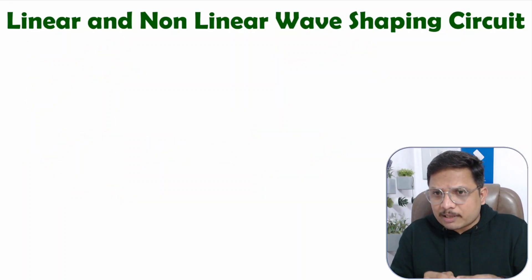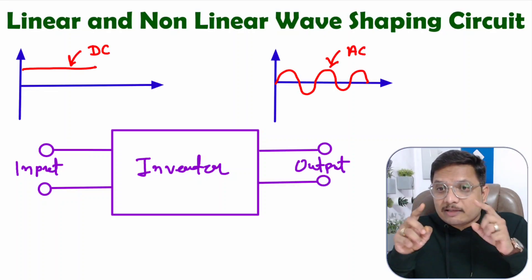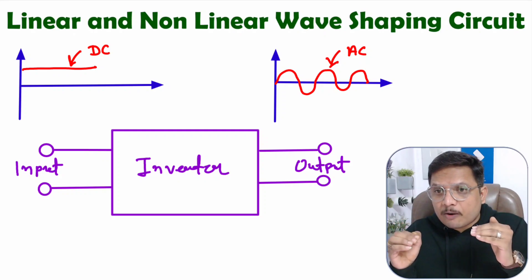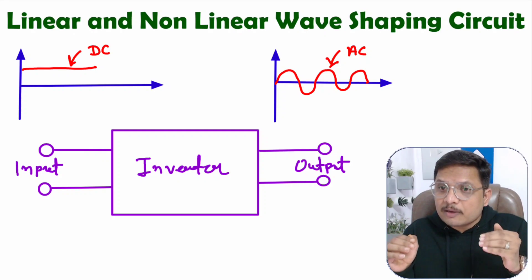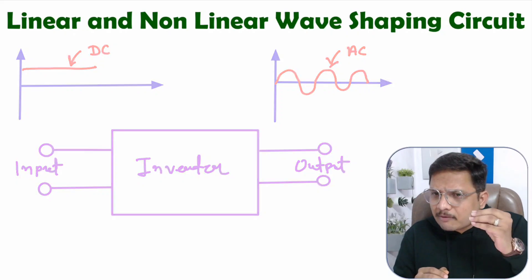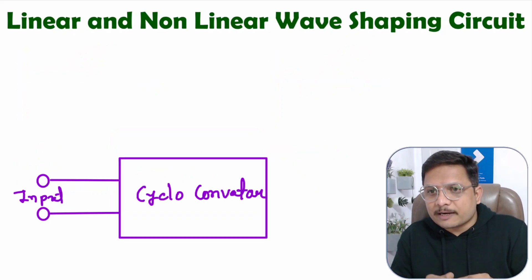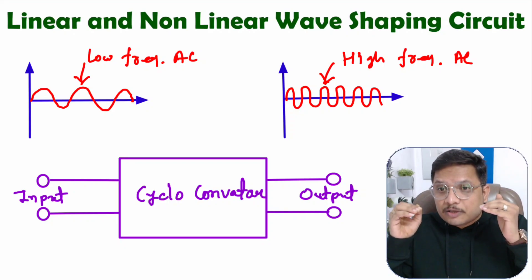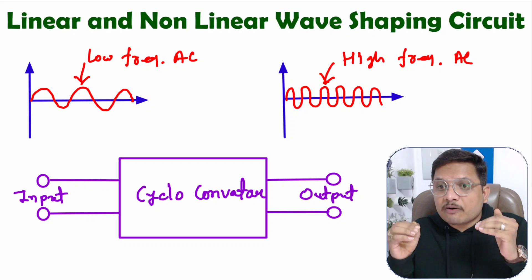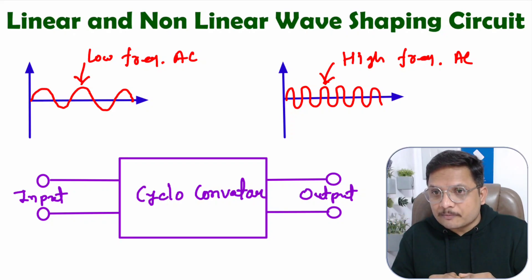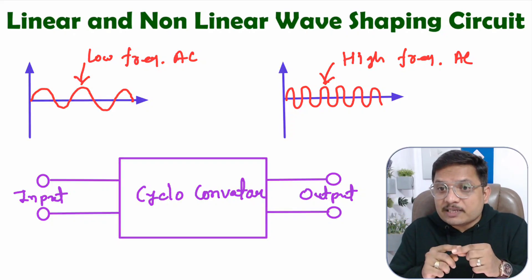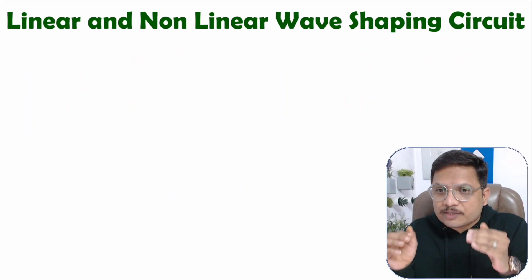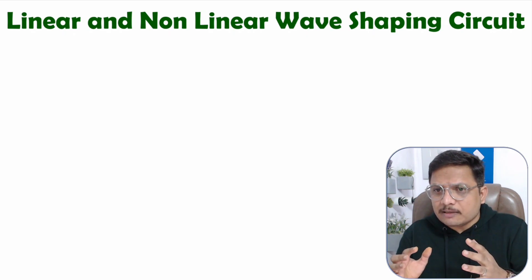Let us have one more example: if you use an inverter, input will be DC and output will be AC, so we are changing the shape of the waveform from DC to AC. Another example — if you use a cycloconverter, then input will be AC and output will be AC, but using a cycloconverter we can change the frequency. So in a way, if we change the shape of the waveform from input to output, that circuit is a wave shaping circuit.